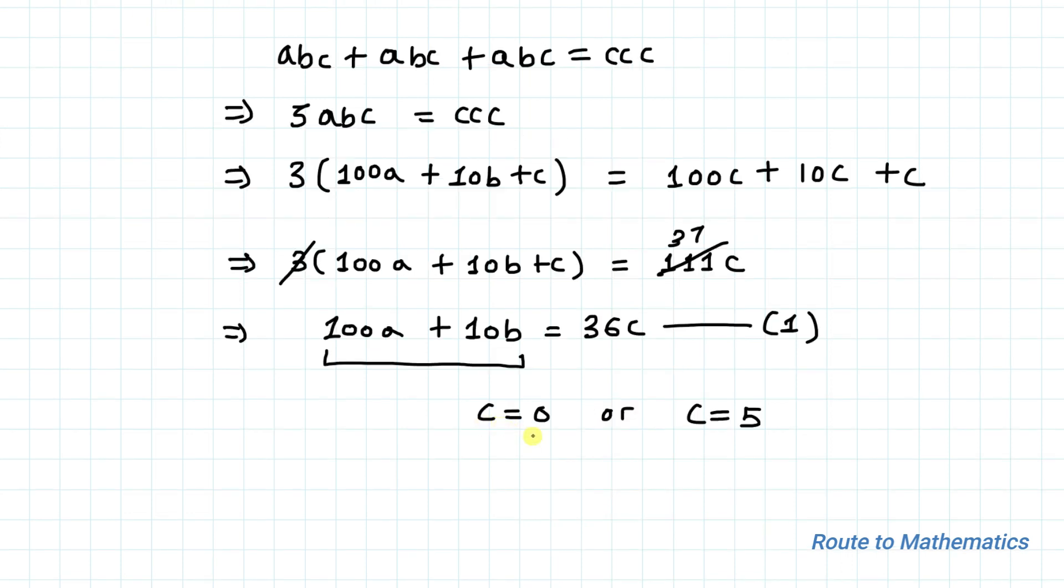Let's check for C equals 0. For C equals 0, the total equation becomes 0. This implies A equals B equals C equals 0.